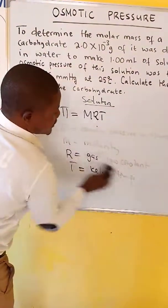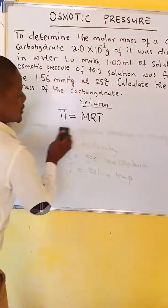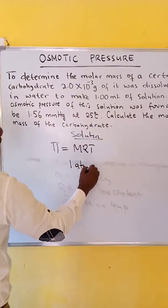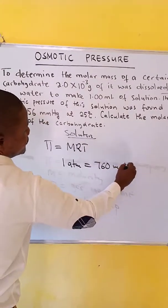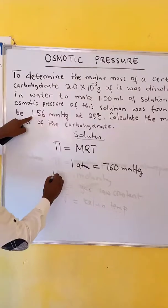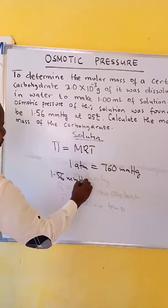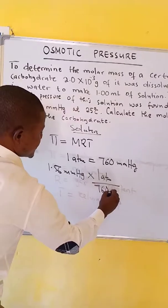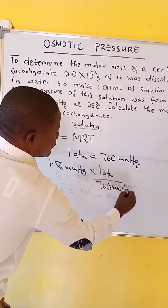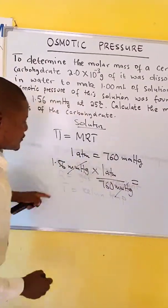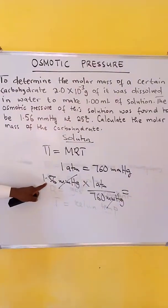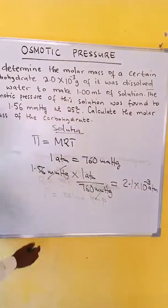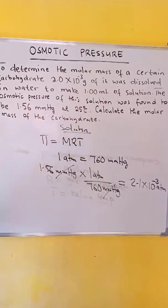We should always convert pressure into atmospheres. We know that 1 atmosphere is equal to 760 mm mercury. In this case we have 1.56 mm mercury, so we divide and we get 2.1 times 10 to the power of negative 3 atmospheres. So this is our osmotic pressure in atmospheres.